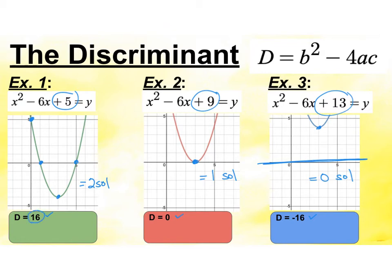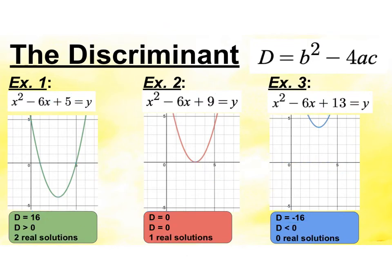If we compare the discriminant value to 0: if it's positive like the first one, I'm going to have 2 solutions. If it actually equals 0, I'm going to have 1 solution. And if it's less than 0, I'm going to have no real solutions. To recap: if the discriminant is greater than 0, you'll have 2 real solutions; if the discriminant equals 0, you'll have 1 real solution; and if the discriminant is negative, it's going to have 0 real solutions. Just by knowing b squared minus 4ac, you'll know how many answers you should find.